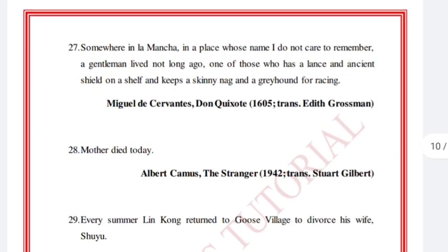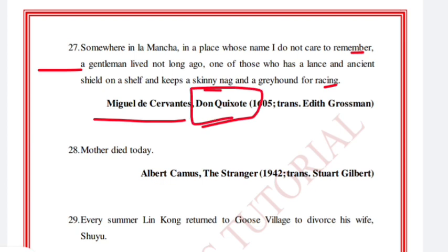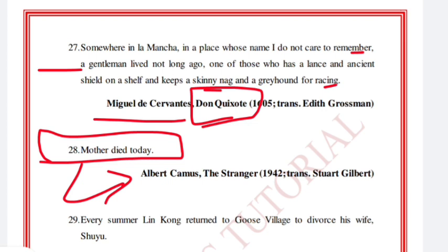'Somewhere in La Mancha, in a place whose name I do not care to remember, a gentleman lived not long ago, one of those who has a lance and ancient shield on a shelf and keeps a skinny nag and a greyhound for racing.' Miguel de Cervantes, Don Quixote. 'Mother died today.' — just this is how it starts. Albert Camus, The Stranger.